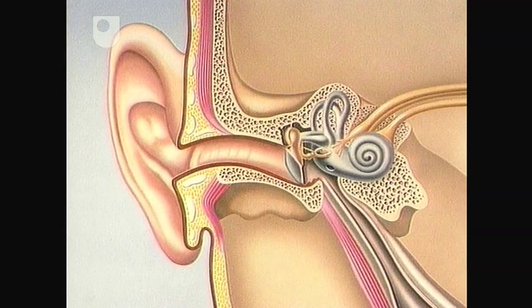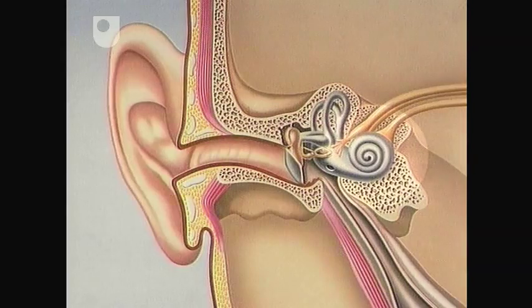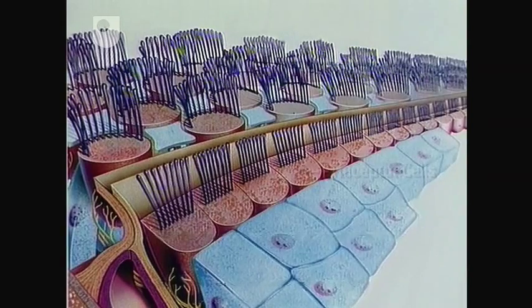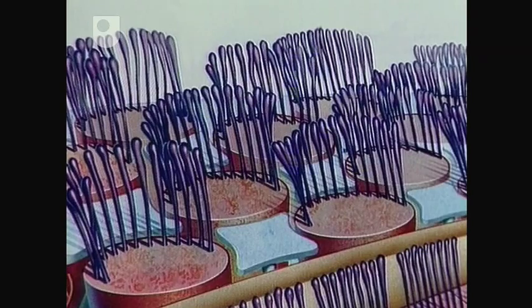So, how does our hearing become damaged? The answer lies deep within the cochlea. Attached to the auditory nerve are some 25,000 receptor cells. Each of these cells is covered in tiny hairs. It's these hairs which respond to the movement of sound waves.